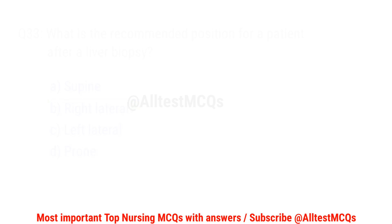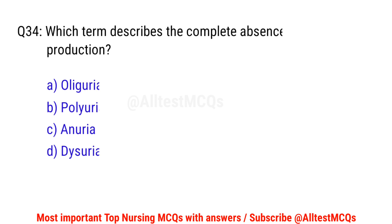Question number 34. Which term describes the complete absence of urine production? The correct answer is C: Anuria.